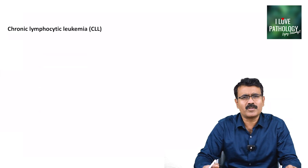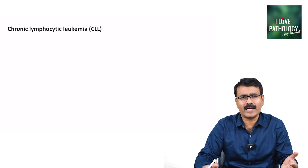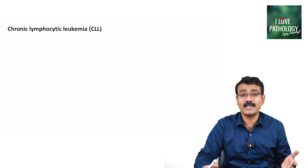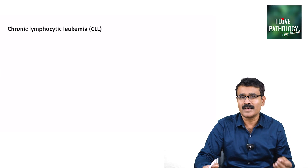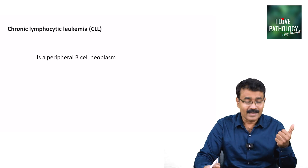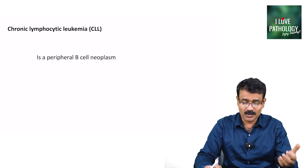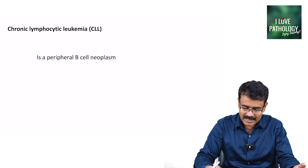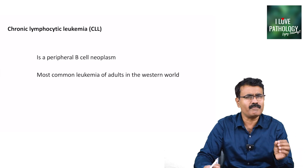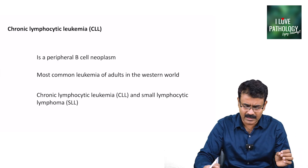What is chronic lymphocytic leukemia? If you recollect the classification we discussed in my earlier session on classification of lymphoid neoplasms, chronic lymphocytic leukemia falls under peripheral B-cell neoplasm. It is the most common leukemia of adults in the Western world.